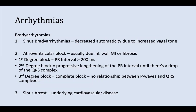The different kinds of bradyarrhythmias: number one, sinus bradyarrhythmia — this is decreased automaticity due to increased vagal tone. The vagus nerve innervating the heart causes an increased parasympathetic nervous system effect, causing a decreased heart rate. The difference between bradycardia, which is normal, and bradyarrhythmia, which is pathological, is that sinus bradyarrhythmia is decreased automaticity — it's not supposed to be happening.